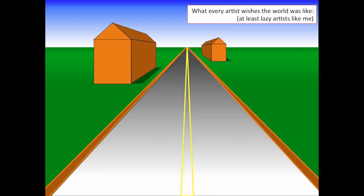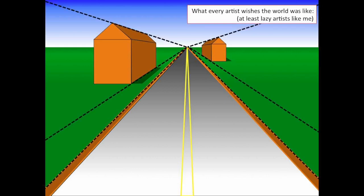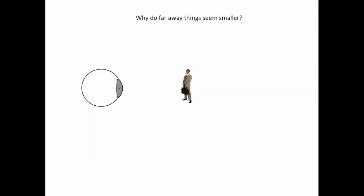So this is what every artist wishes the world was like, at least lazy artists like me. Here we have a nice landscape. Everything's parallel to everything else. Everything's nice, lined up properly, real neat and tidy. All the perspective lines run together and intersect right at the vanishing point, which is right on the horizon. This is right out of your basic textbook on how to draw in one-point perspective. And as you see, the things that are farther away, like the house on the right, are smaller than things closer. Why is that? Why do things far away seem smaller?